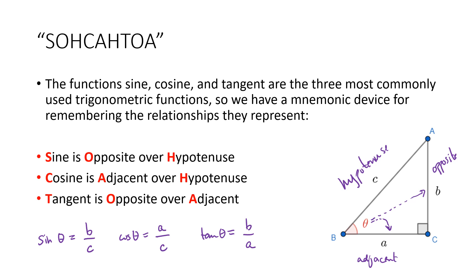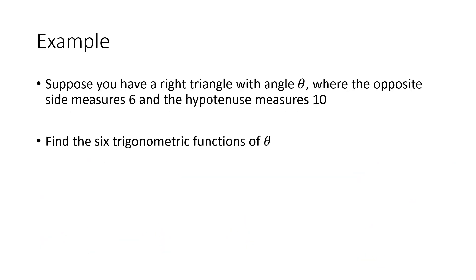SOHCAHTOA doesn't cover the other three trigonometric functions, but when we start talking about identities in the next video, we'll talk about ways of figuring out those other functions once you know the opposite, hypotenuse, and adjacent sides. For now, let's do an example before we get into those identities and shortcuts. Say we have a right triangle with angle theta where the opposite side measures 6 and the hypotenuse measures 10.